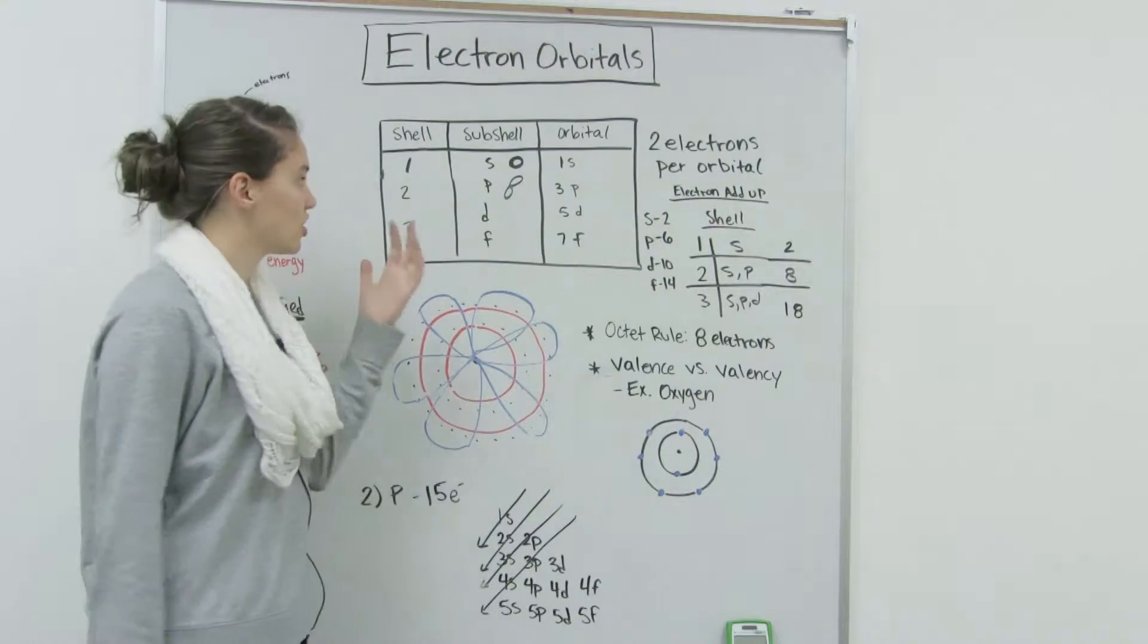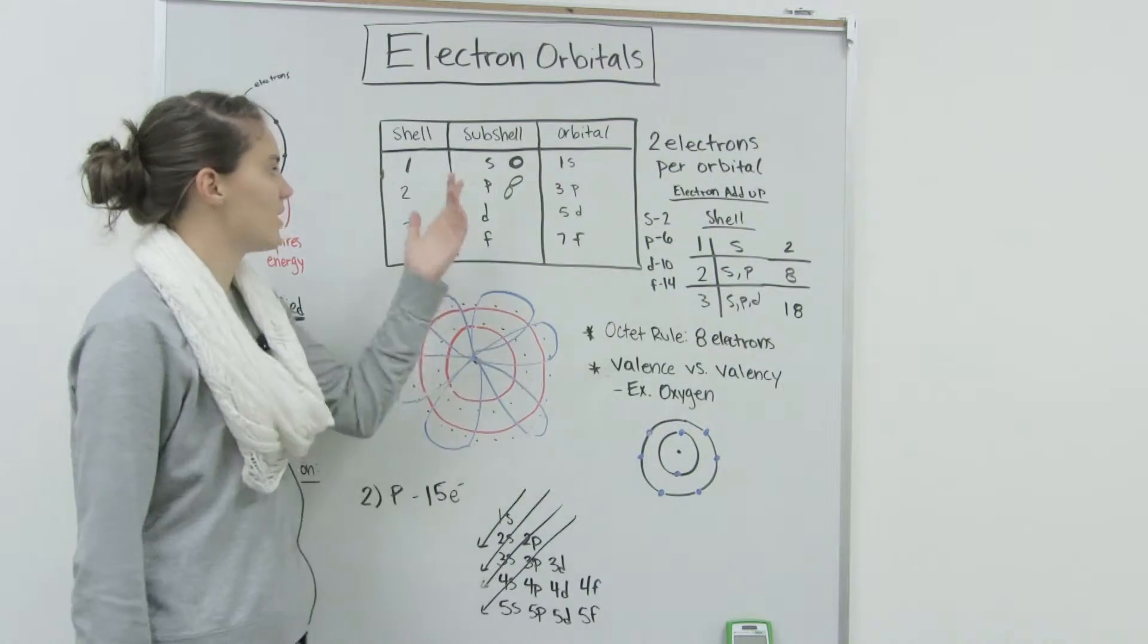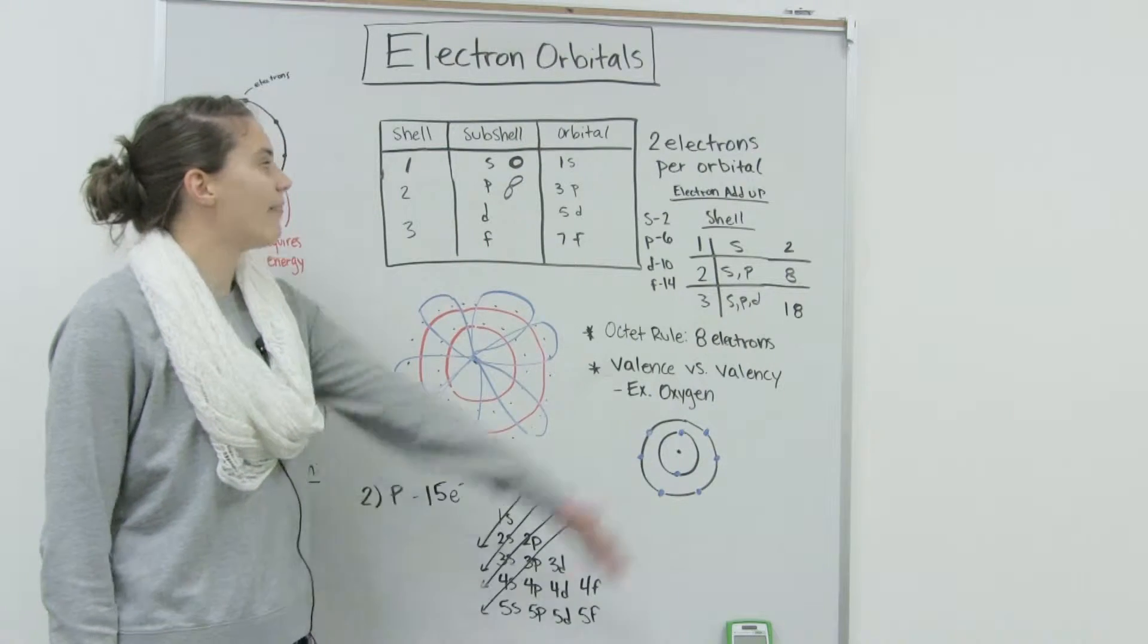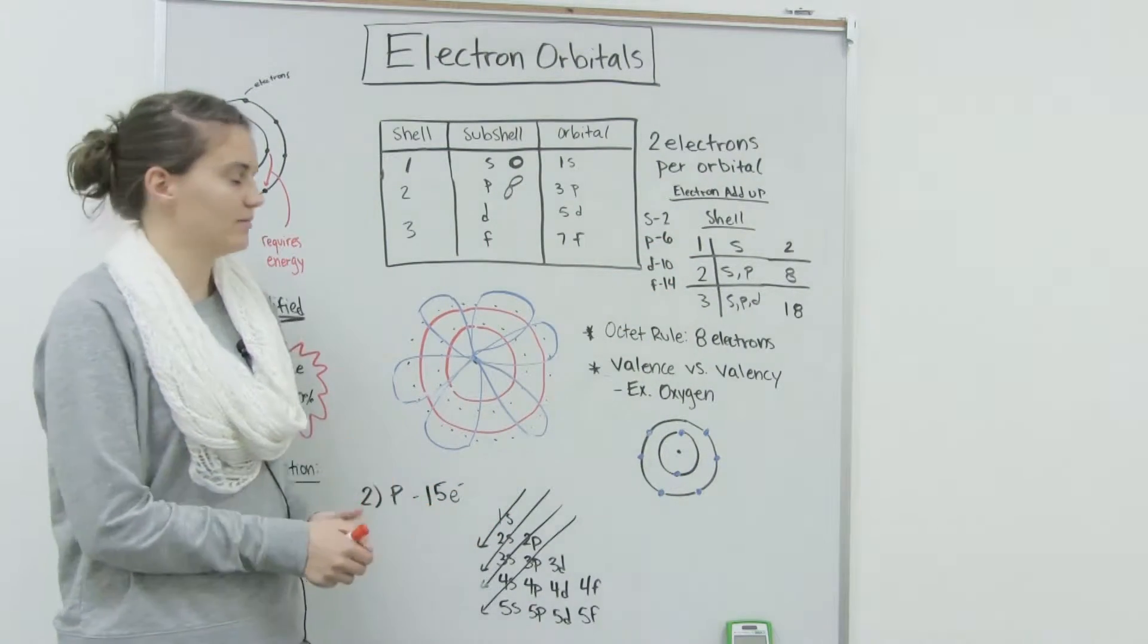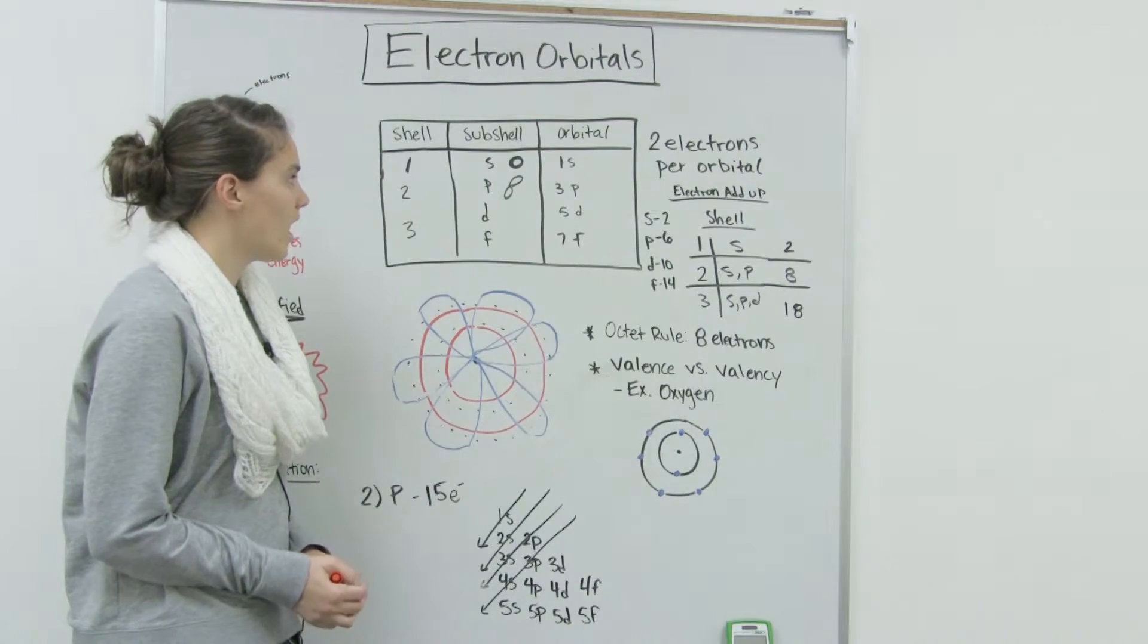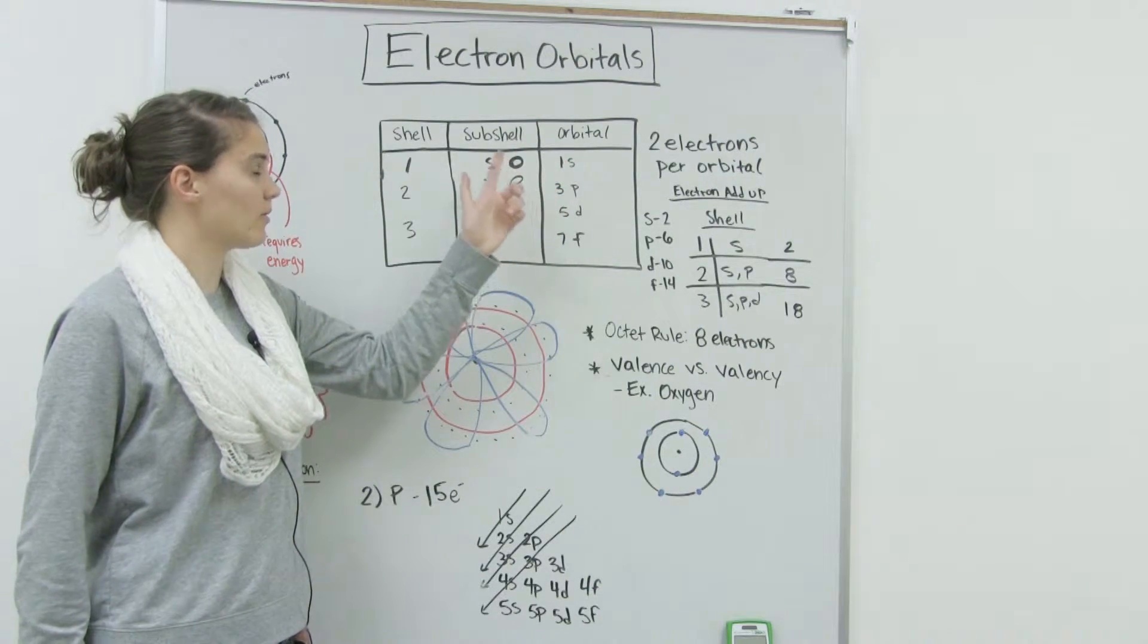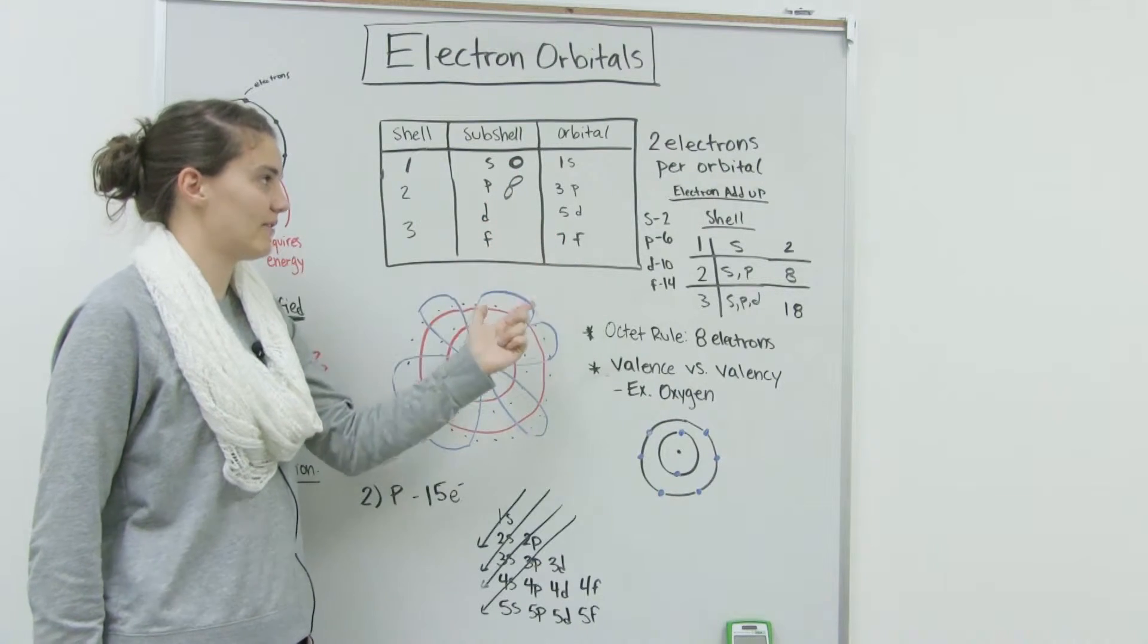Subshells describe the shape of the orbital, and so we have S, P, D, and F. And then orbitals are the space themselves, where they're 90% of the time. And there is one S orbital, 3P, 5D, and 7F.